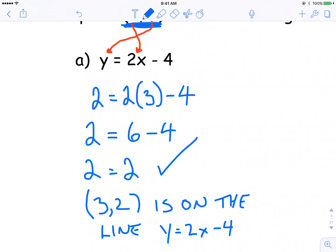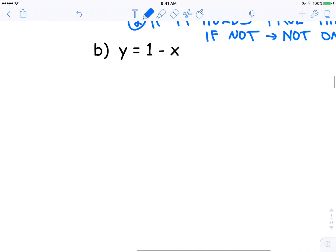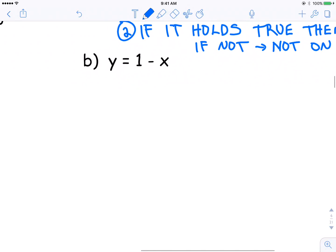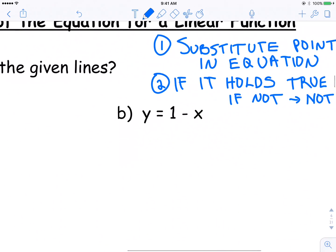Sometimes we call that being a solution. So if we ever get a chance to look at inequalities, well, things change a little bit. But if it lies on the line, it is a solution. So question B, y is equal to 1 minus x. Again, we're still checking that same point. What was that same point? (3, 2).